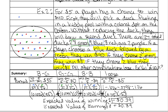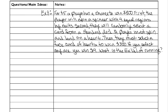Now I'm going to show you another example. For $5, a player has a chance to win $300. First, the player will spin a spinner with four equal regions by suit. Second, they will randomly select a card from a standard deck. A player must spin and land on a heart, then select a face card of hearts to win $300. If you select any ace after spinning a heart, you will win $9. What is the expected value of running this game?